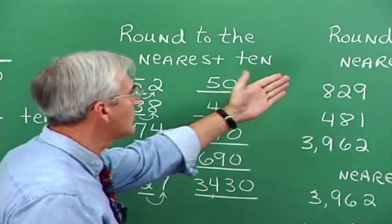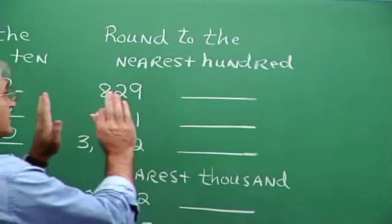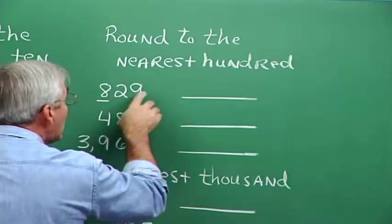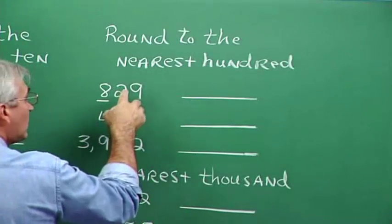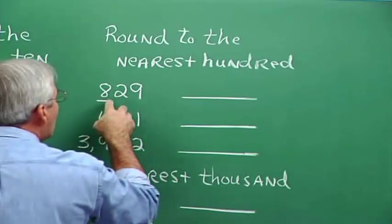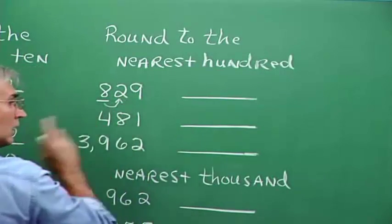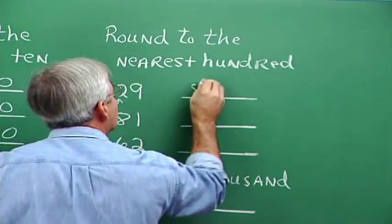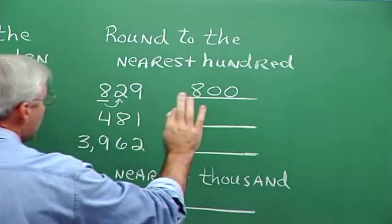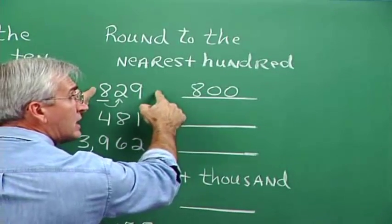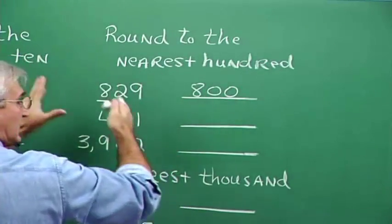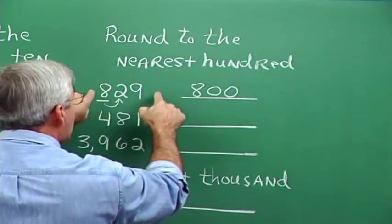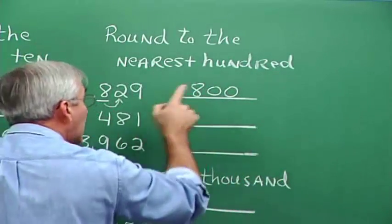Suppose we want to round these numbers to the nearest 100. We identify the digit we're rounding to — the hundreds digit is the 8 in 829. We look at the neighbor to the right — only the tens digit, the 2, not the 9. That neighbor is less than 5, so we just drop it off. We'll have 800 as the nearest 100. If you think about this on a number line with hundreds marked off — 500, 600, 700, 800, 900 — 829 is nearer to 800 than to 900, so that's why we round this way.